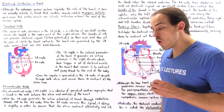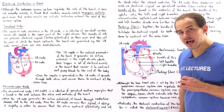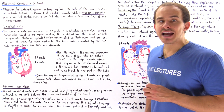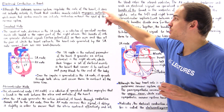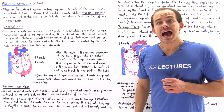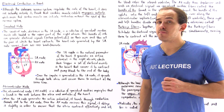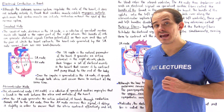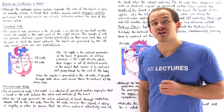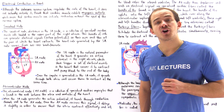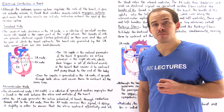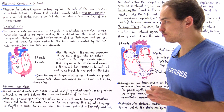Cardiac muscle cells exhibit myogenic activity, which means our cardiac muscle cells are actually capable of generating their own electrical signal on their own accord, without the input of our nervous system.